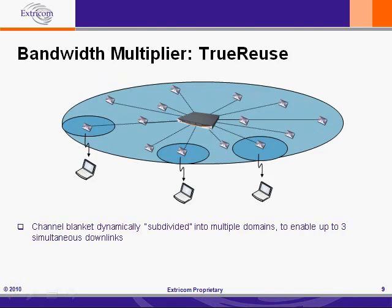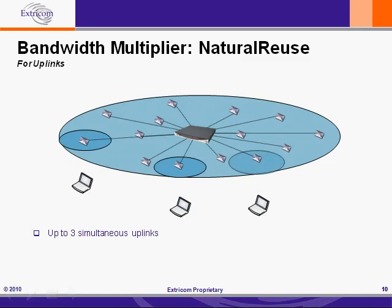In many of today's web-based applications, downlink capacity is of primary importance because users download a lot more data than they upload. Nevertheless, Extracom also has addressed uplink capacity with a feature called natural reuse. Natural reuse enables up to three simultaneous uplinks on a single channel blanket. So with efficient reuse of just one channel, Extracom achieves the same uplink and downlink capacity as the three-channel, 9-AP microcell deployment discussed earlier.